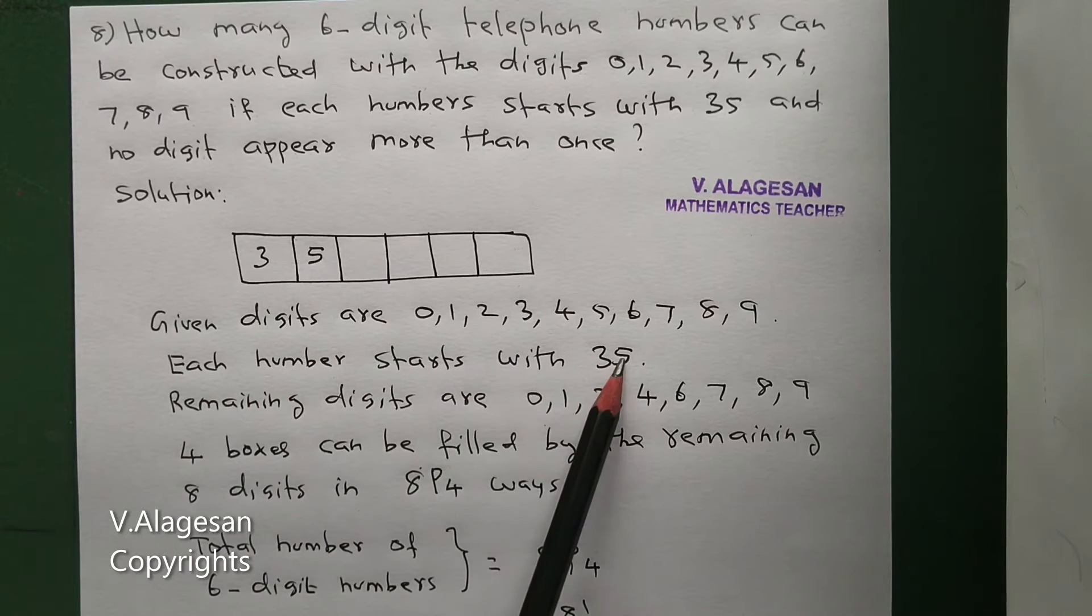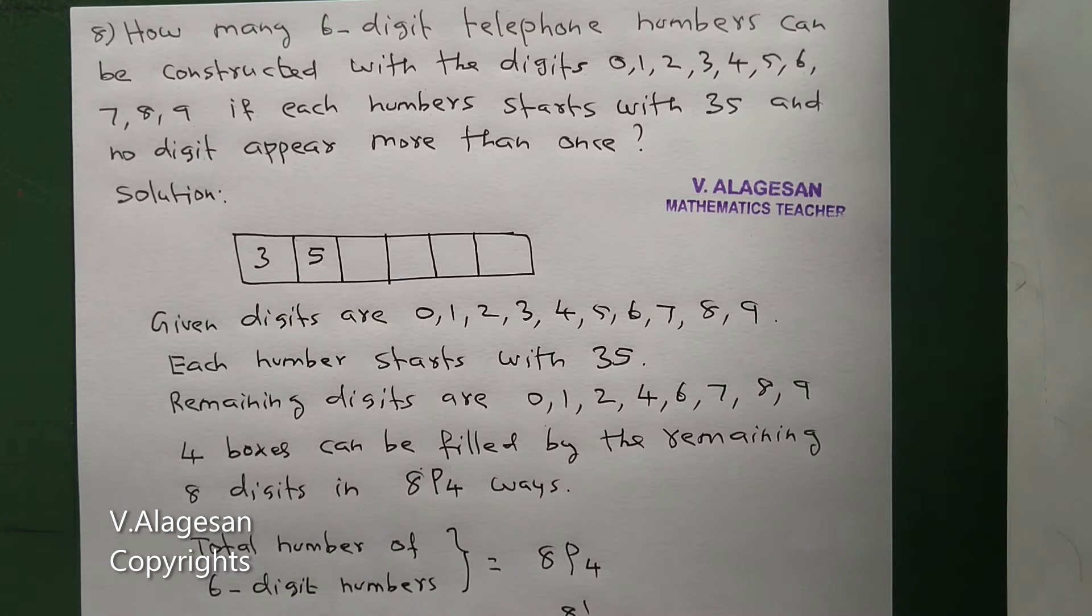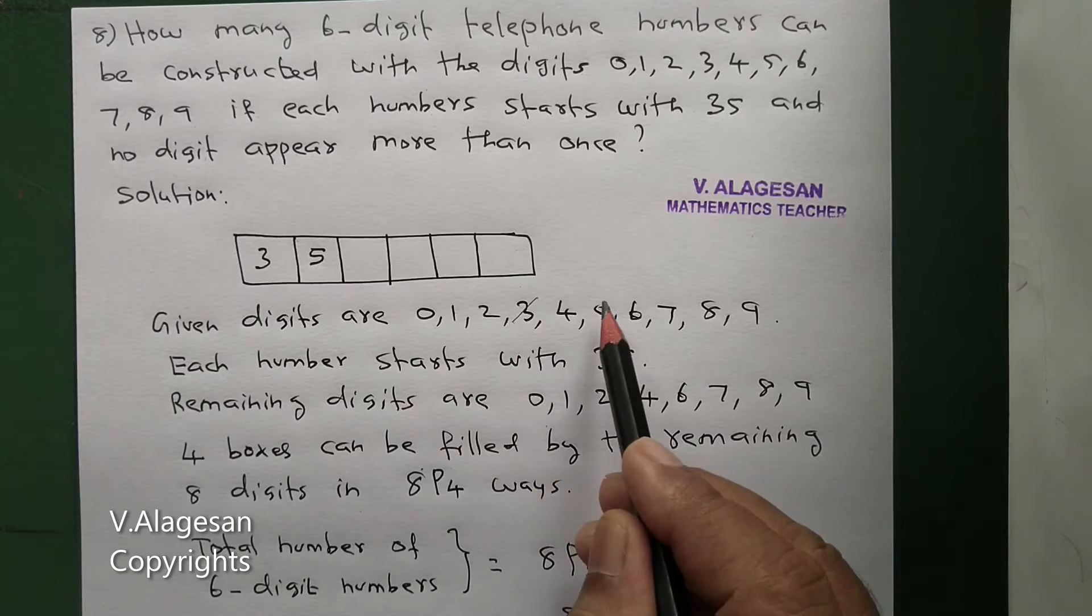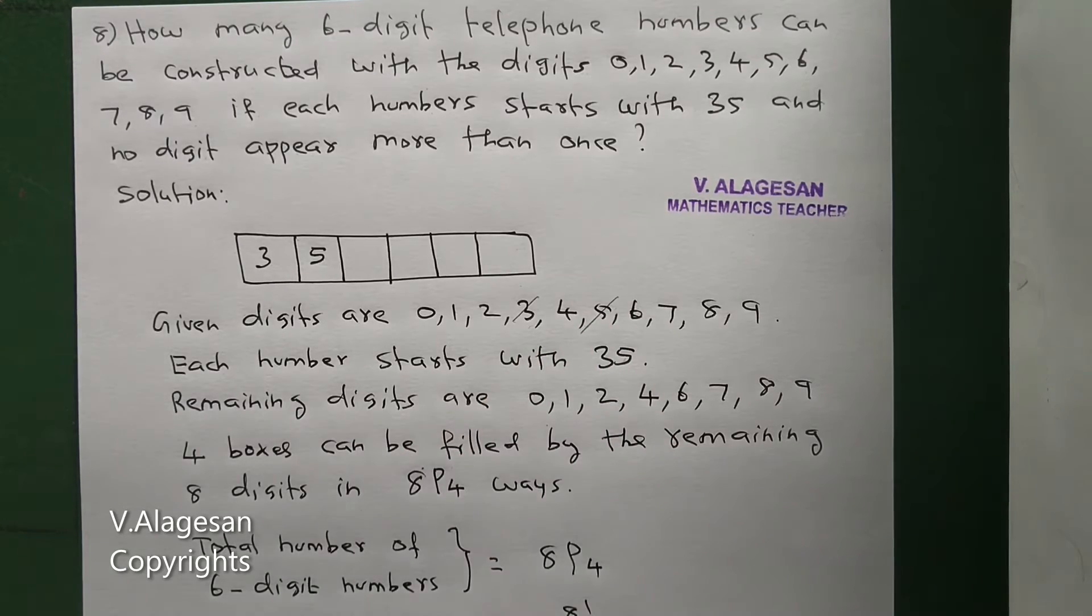All numbers, first two numbers is 3, 5. So, first box is 3, second box is 5, filled up. Okay? So, remaining digits...